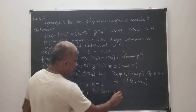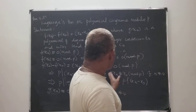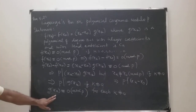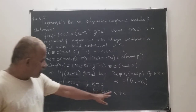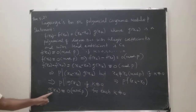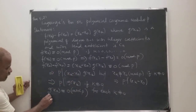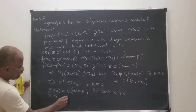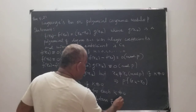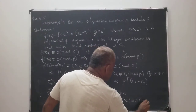Therefore G of xk is congruent to 0 mod P for each k not equal to 0. This means for k equal to 1, 2, ..., n: x1 is a solution for G of x, x2 is a solution, x3 is a solution. Therefore x1, x2, ..., xn are the solutions of the polynomial congruence G of x congruent to 0 mod P.